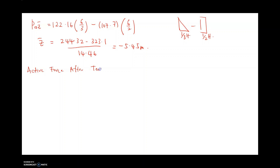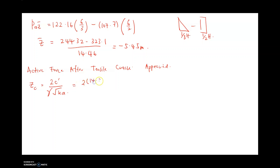For the active force after the tensile crack appears, we first need to determine zc, the depth at which the crack occurs. Using the equation zc = 2c / (gamma·√Ka): 2 × 14.36 / (17.4 × 0.625), our zc value is 2.64 meters.